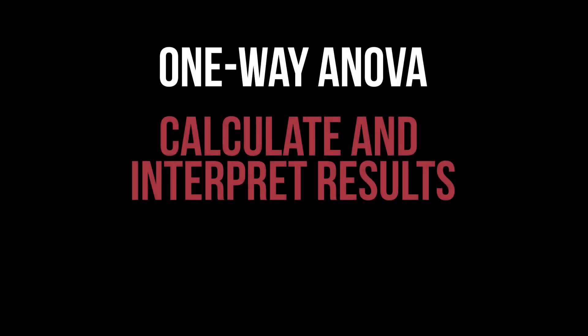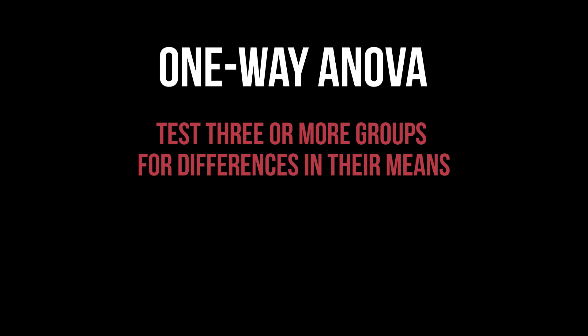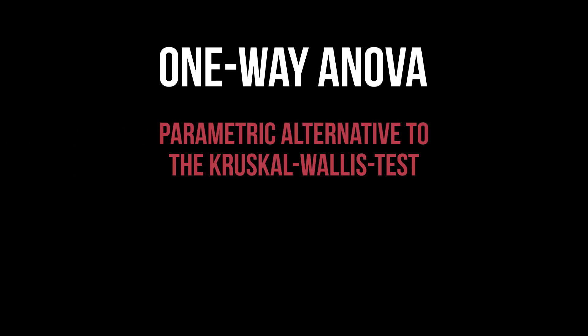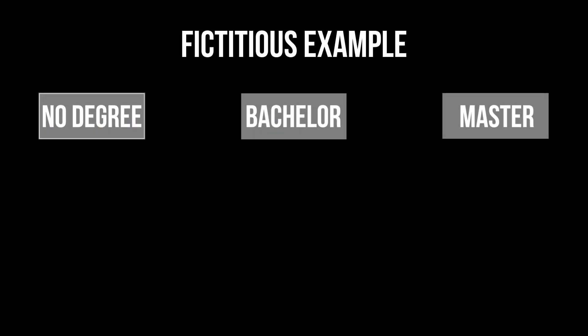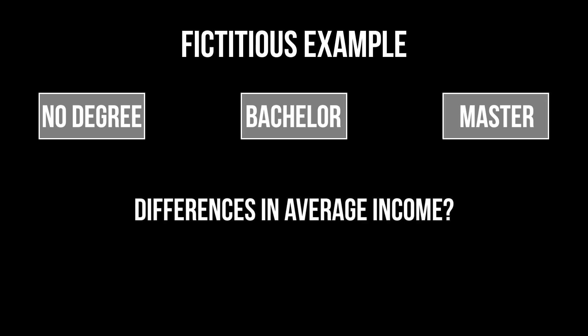This tutorial shows how to conduct the one-way ANOVA in SPSS and interpret its results. Its purpose is testing three or more groups for differences in their means. It is the parametric alternative to the Kruskal-Wallis test. For example, I have a group variable depicting whether the person has no degree, a bachelor's, or a master's degree. I use the one-way ANOVA to test for a difference in the average income between those three groups.